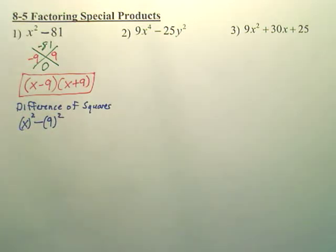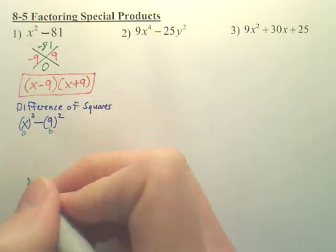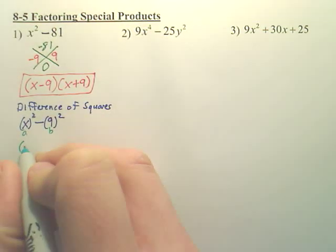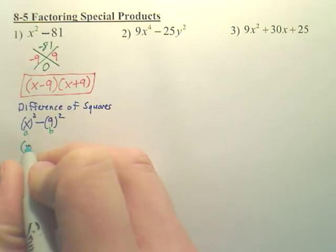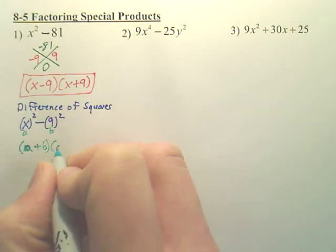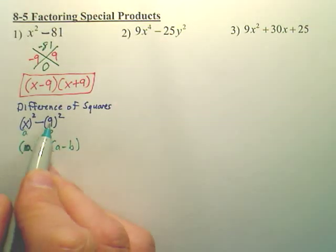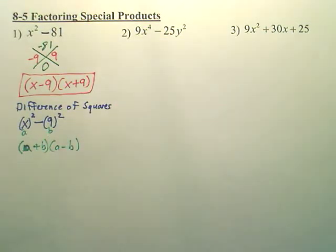And basically, how you factor it is you call this a and this b. And your answer is always going to be a plus b and a minus b. a, b. a is x, b is 9.